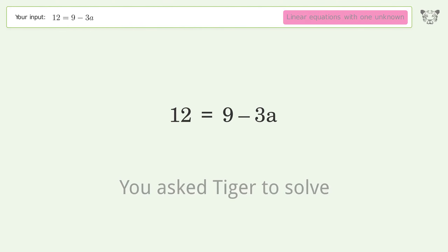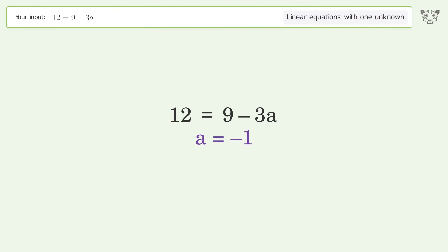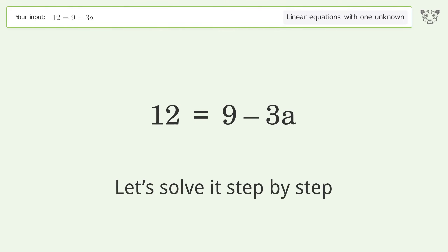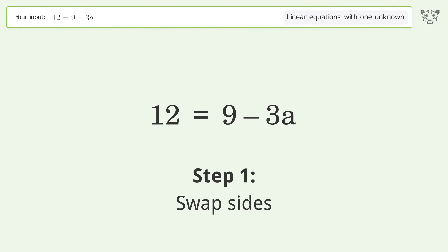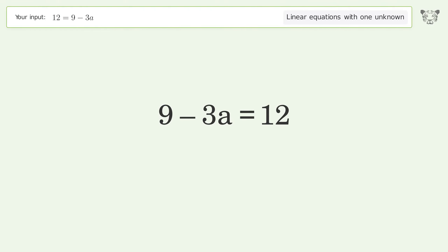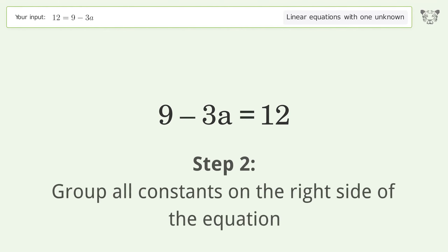You asked Tiger to solve this — it deals with linear equations with one unknown. The final result is a equals negative one. Let's solve it step by step: swap sides.